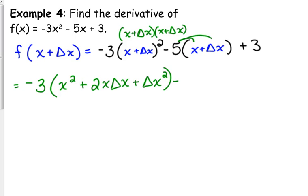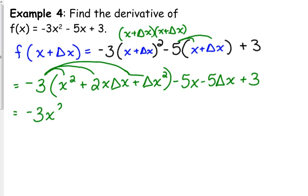We need to distribute that negative 5. Now, it is very, very integral that you are very careful with your signs when you're doing these. Because sometimes if you mess up one sign, you've messed up the whole problem. Okay, distribute the negative 3. Negative 3x squared minus 6x delta x minus 3 delta x squared minus 5x minus 5 delta x plus 3.